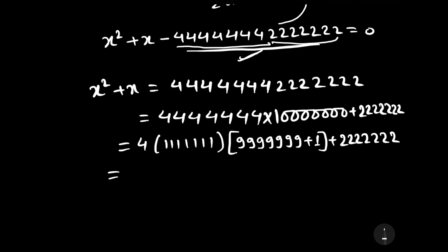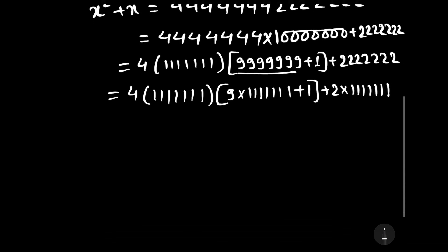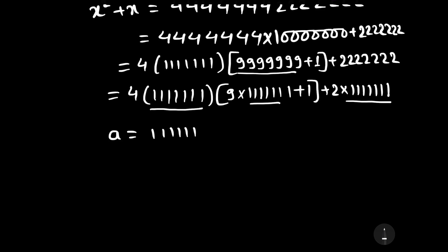Further, we can write it as 4 times 7 to the power 1, and write the next term as 9 into 7 to the power 1. So we get 7 to the power 1 plus 1 plus 1, and 7 squared can be written as 2 into 7 to the power 1. Now we can see that 7 to the power 1 appears everywhere, so we let a equal to 7 to the power 1.